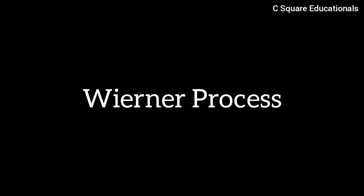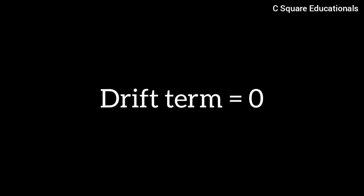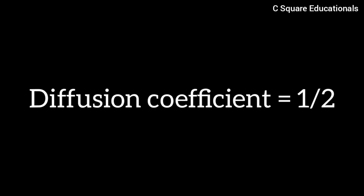A standard Wiener process is generated by the stochastic differential equation dX_t equivalent to dW_t.